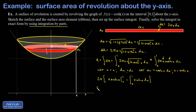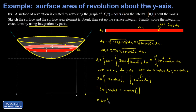Evaluating the first piece across the limits: plugging in the upper limit gives 1 times sinh(1), and the lower limit gives 0 times sinh(0), which is 0. For the remaining integral, the antiderivative of sinh is cosh, giving cosh(x) evaluated from 0 to 1. This is one way to leave the answer, but it's not ideal.